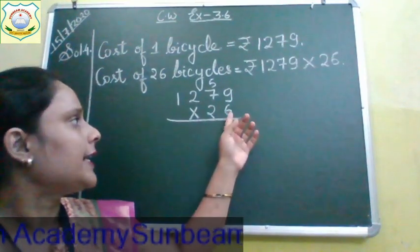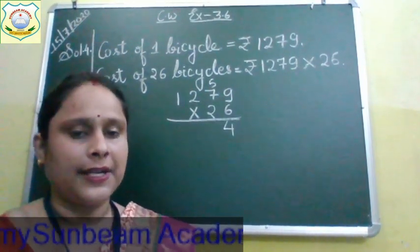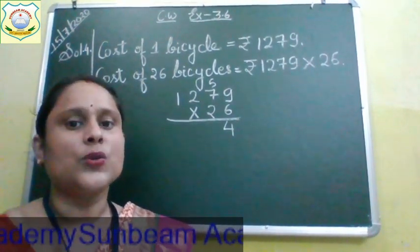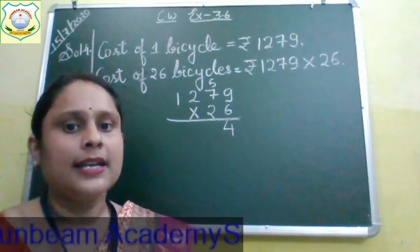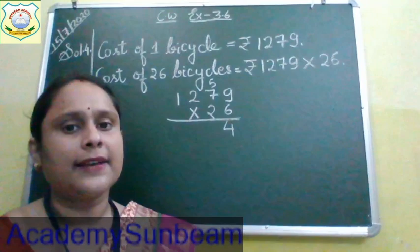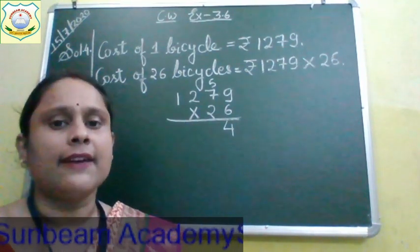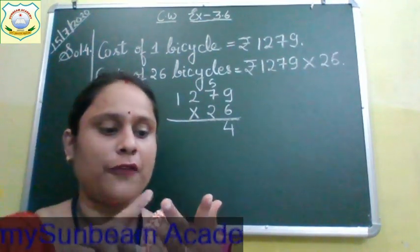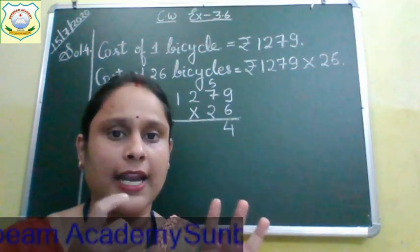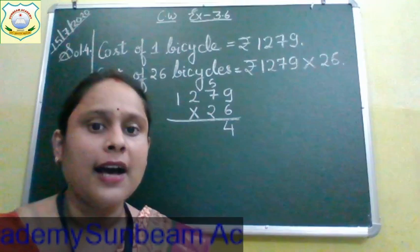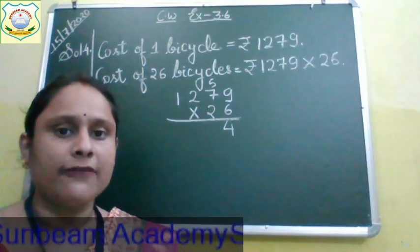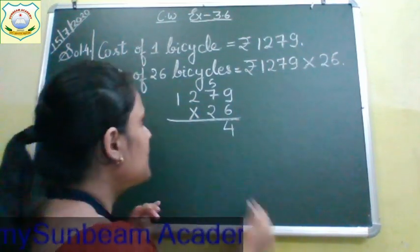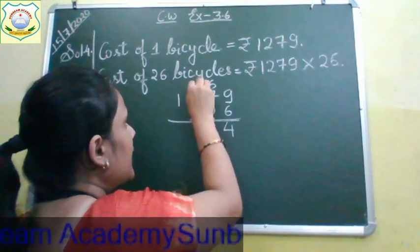Now we will multiply 6 by 7. Say the table of 6 seven times: 6 ones are 6, 6 twos are 12, 6 threes are 18, 6 fours are 24, 6 fives are 30, 6 sixes are 36, 6 sevens are 42. Then 42 plus 5 carry is 47. So we will write 7 and carry 4.